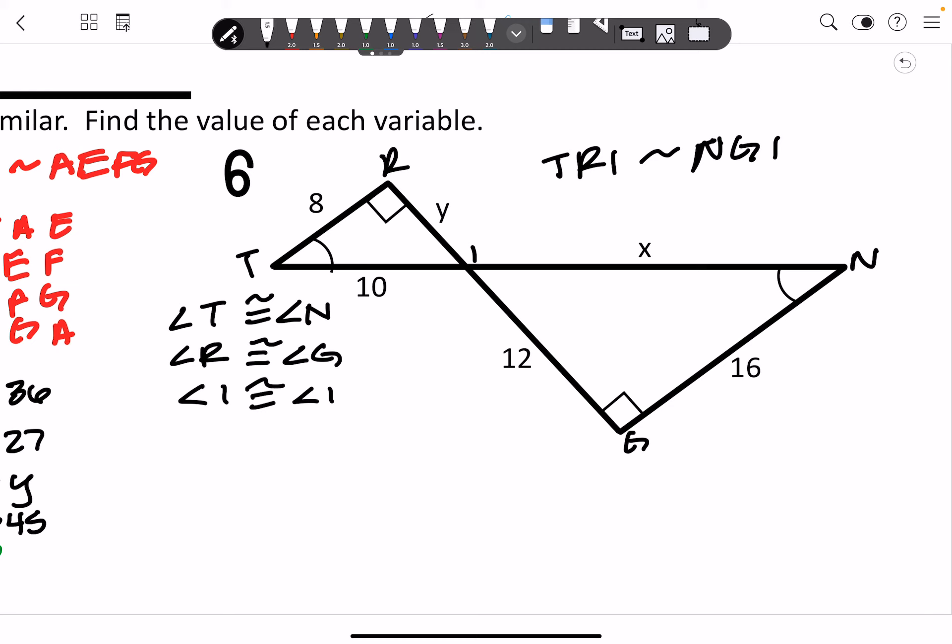Write your similarity statements. And then you can either figure out your scale factor and multiply to figure out what X is and Y is. Or you can set up proportions and do it that way. Once you're done, you will get the final answer of X being 6 and Y being 20.